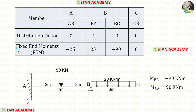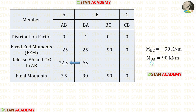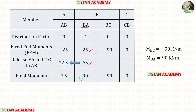Now let us apply the fixed end moments. For AB and BA, we apply the calculated fixed end moments. For BC, we apply the already calculated final moment of minus 90. At the overhanging end, the moment is 0. We have already calculated MBA = 90 kNm, so we make BA equal to 90. The fixed end moment for BA is 25, and when we add 65 to 25, we get 90.